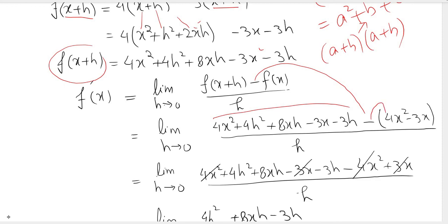So this negative would multiply with the 4x squared and with the minus 3x. That gives you minus 4x squared, and minus times minus becomes plus 3x.